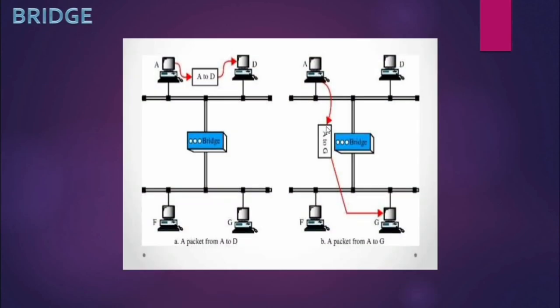In this pictorial representation, two bridges are used in two different connections to create a bridge between them, so that the particular networks can connect together. Multiple networks can be implemented and can share their resources together using this bridge.